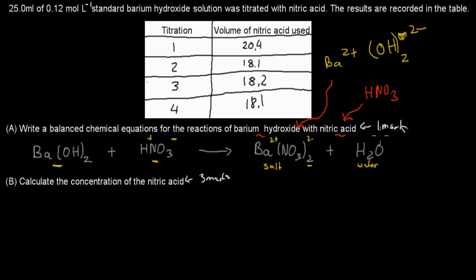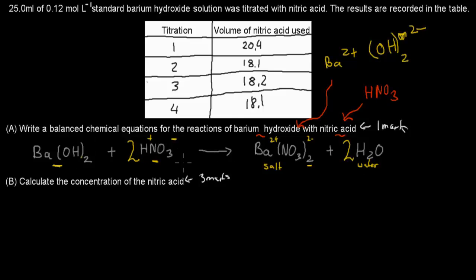Now it does need to be a balanced chemical equation, and at the moment it's not balanced. We have 1 barium on each side — that's fine. But we have 1 nitrate on the left and 2 on the right, so we put a 2 in front of HNO₃. That gives us 4 hydrogens on the left and only 2 in the water, so we put a 2 in front of the water. Now the hydrogens and oxygens are all balanced.